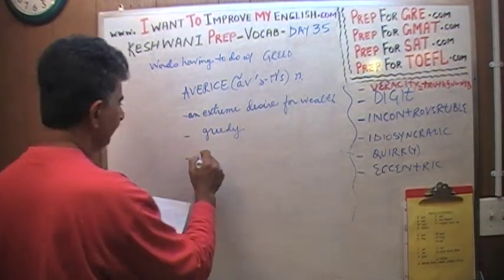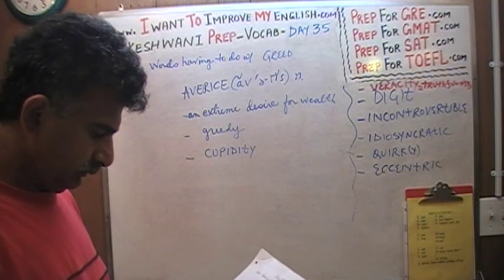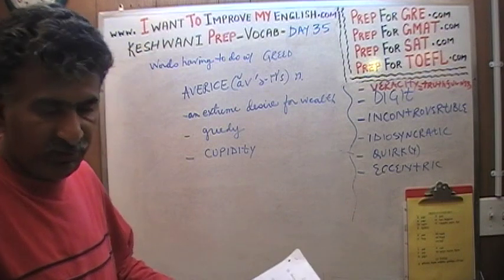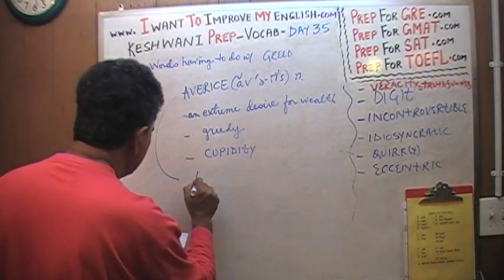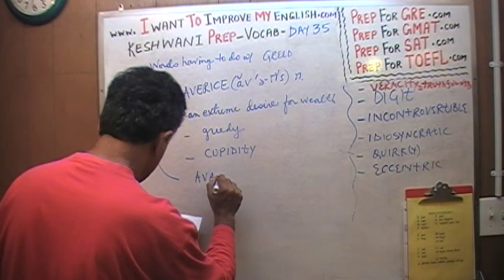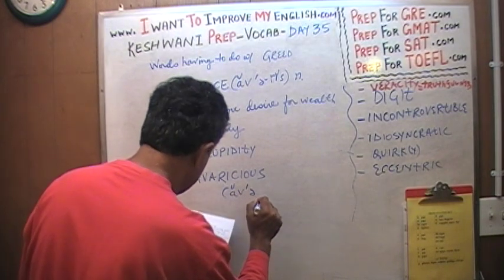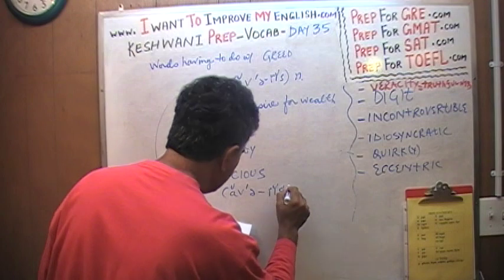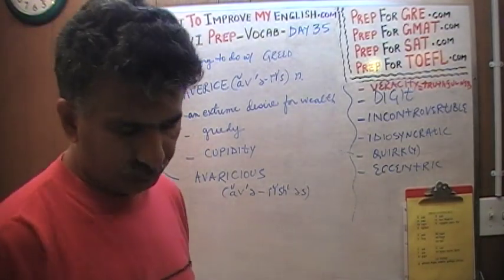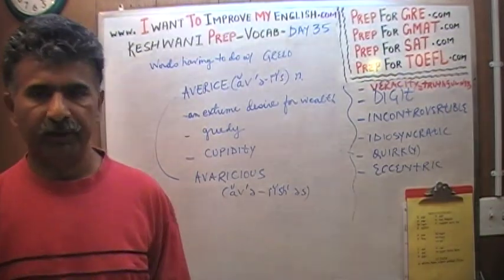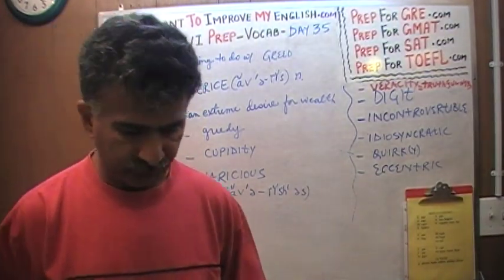Avarice also means cupidity — we will learn that in a second. It just means extreme desire for wealth; it means to be greedy. The adjective of avarice would be 'avaricious.' If a person is avaricious, that means they have avarice — they have greed. They are being rapacious, voracious, ravenous — whatever you want to call it.